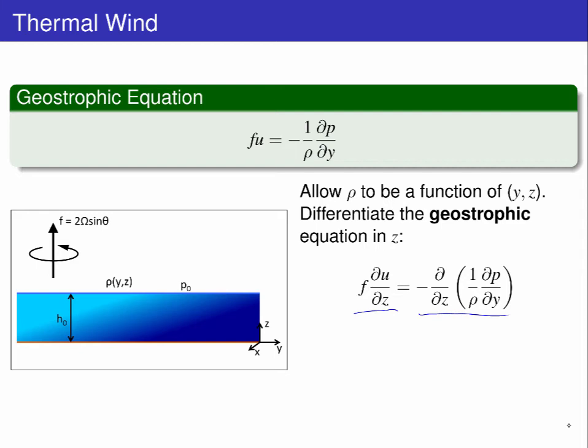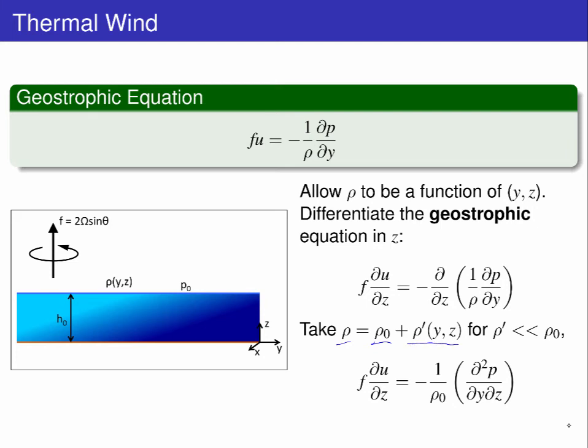If we consider the density to be the uniform reference density plus some relatively small change from this rho prime, the vertical gradient of the density is small enough to be ignored.